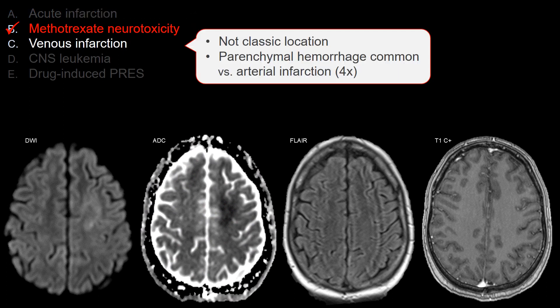For venous infarction, this doesn't follow the classic location or territory of venous infarction. They do not really occur adjacent to venous sinuses such as toward the vertex along the superior sagittal sinus or around the temporal lobe or inferior parietal lobe where the transverse sinus typically drains. Also for the board exam, remember venous infarction tends to present with parenchymal hemorrhage, much more commonly than arterial infarction with hemorrhagic transformation.